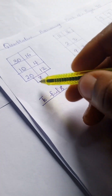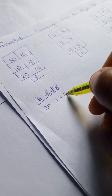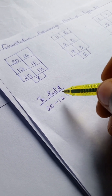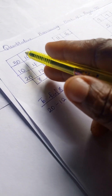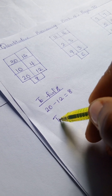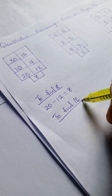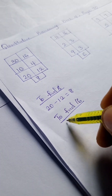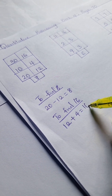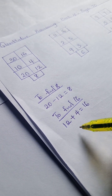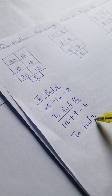To find 8, we have 20 minus 12, which gives us 8. To find 16, we have 12 plus 4 equals 16.